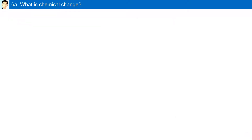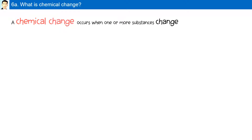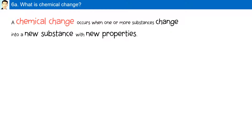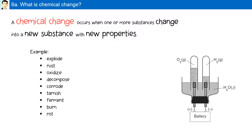What is a chemical change? A chemical change occurs when one or more substances change into a new substance with new properties. For example: explode, rust, oxidize, decompose, corrode, tarnish, ferment, burn, or rot are all chemical changes.